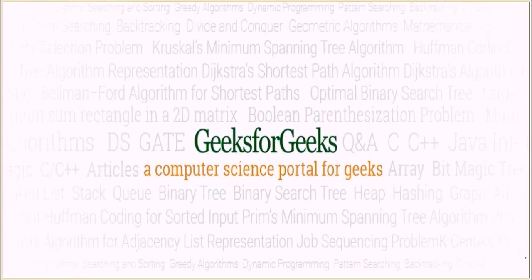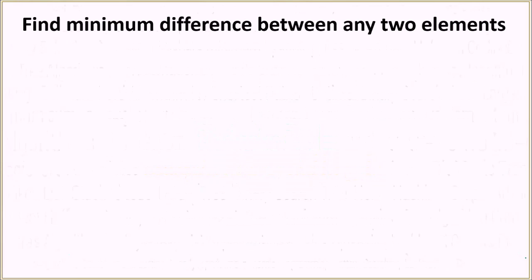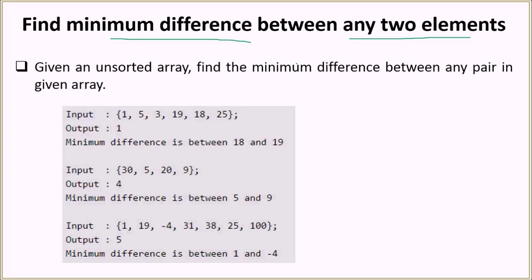Hello everyone and welcome to GeeksforGeeks. The problem we are going to see today is to find the minimum difference between any two elements in an array. You will be given an unsorted array and you have to find the minimum difference between any pair in the given array.